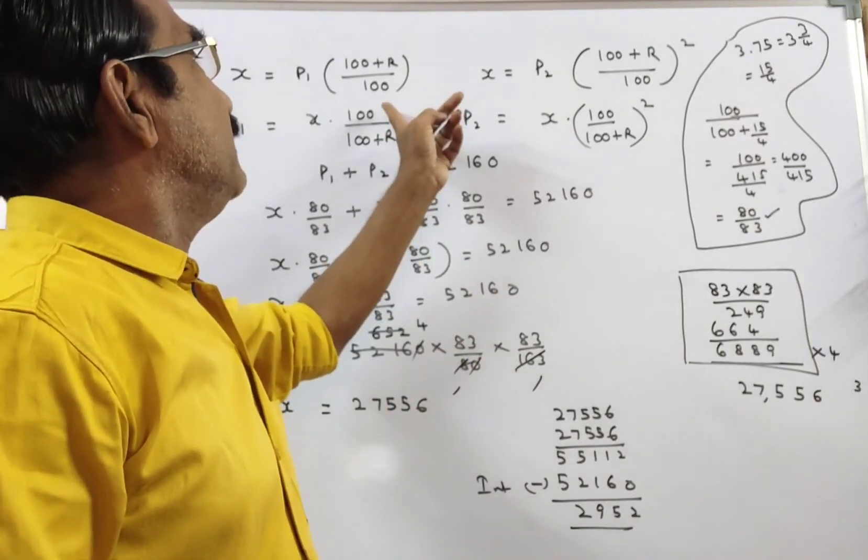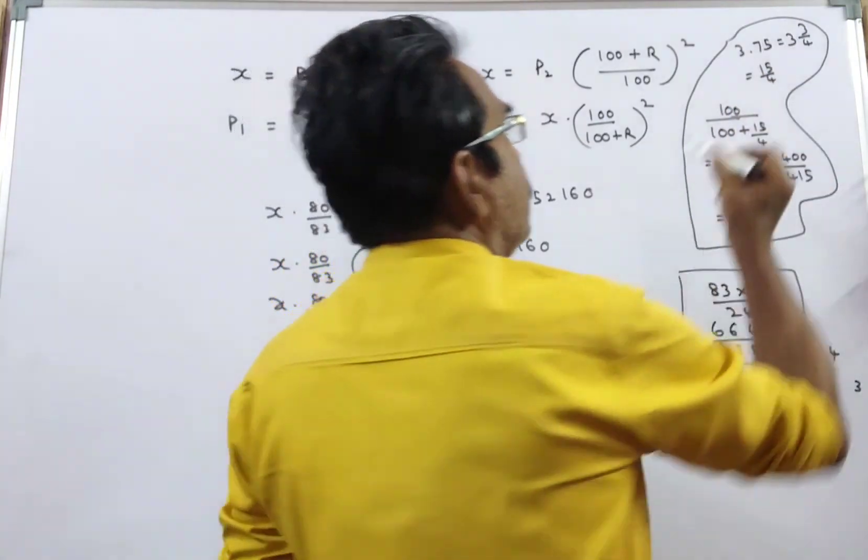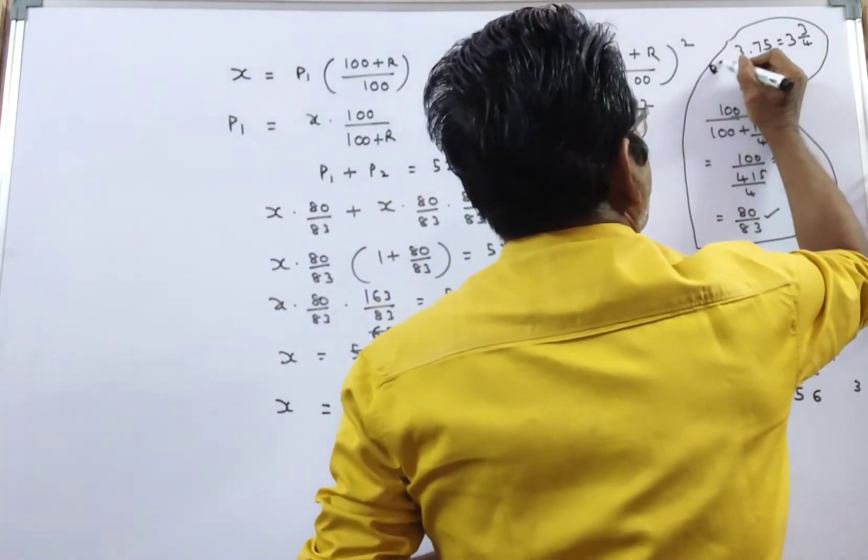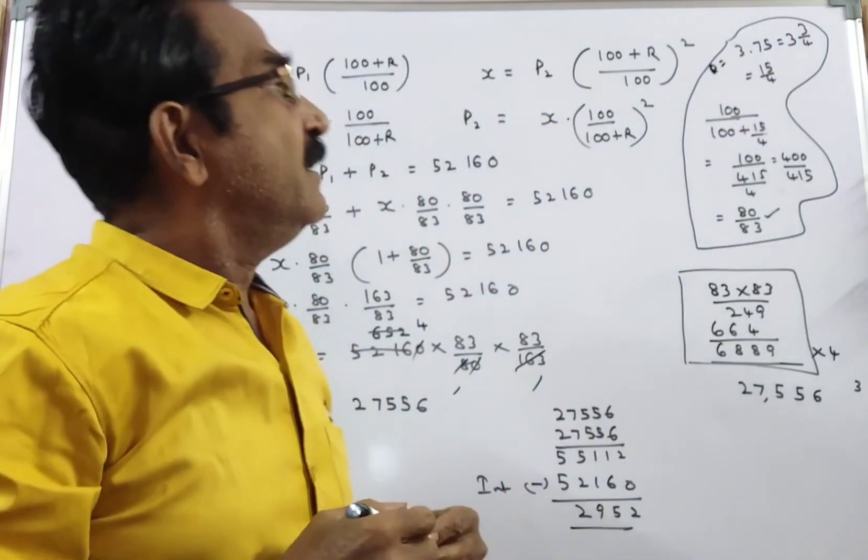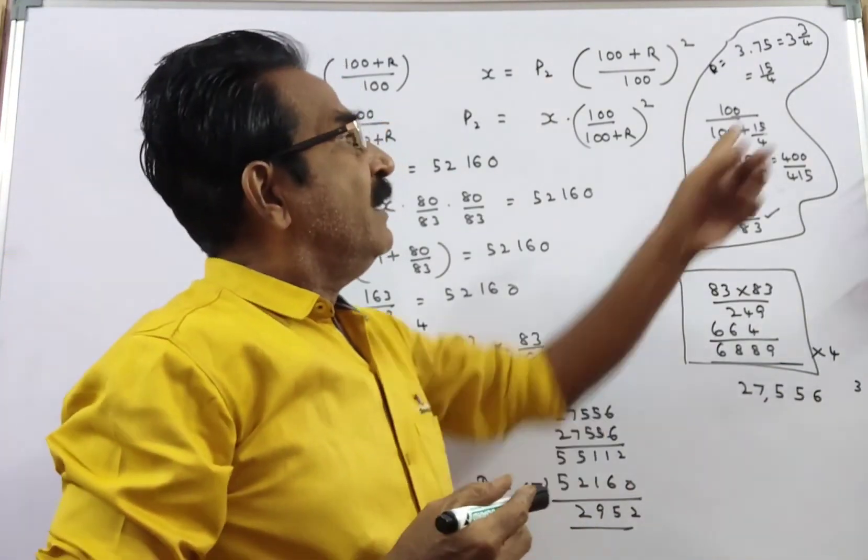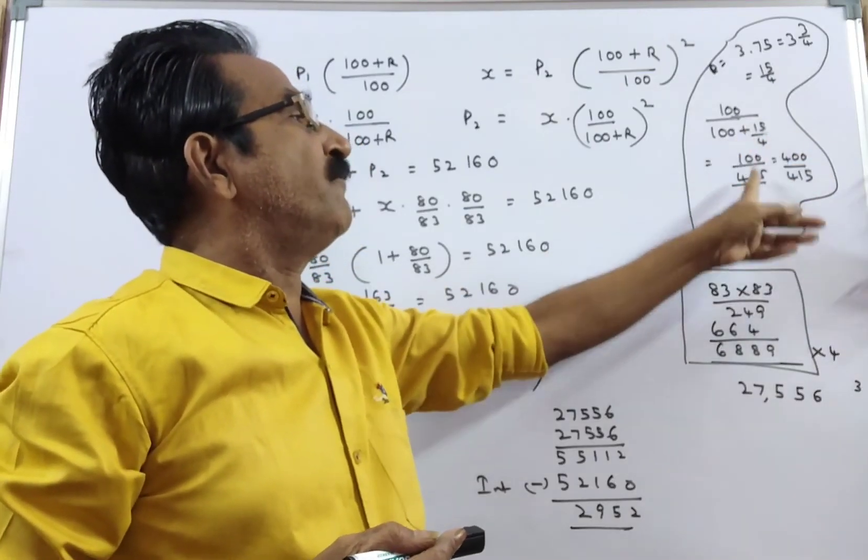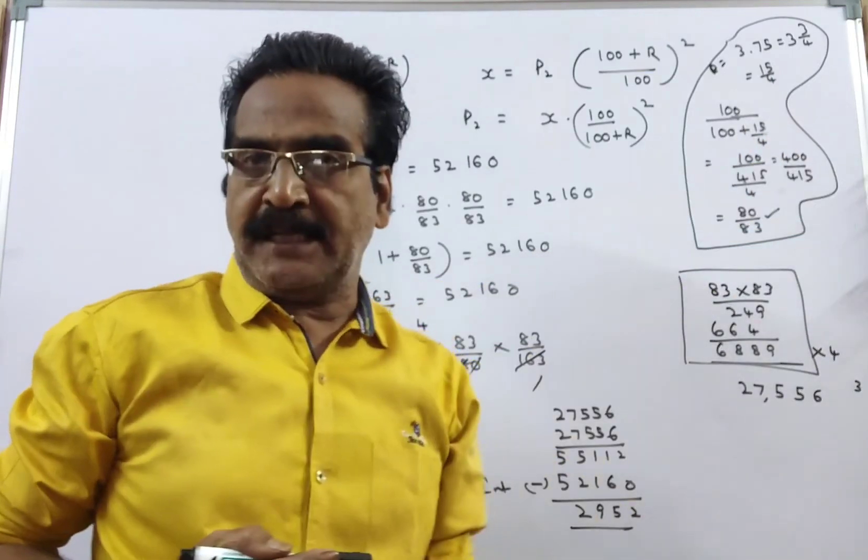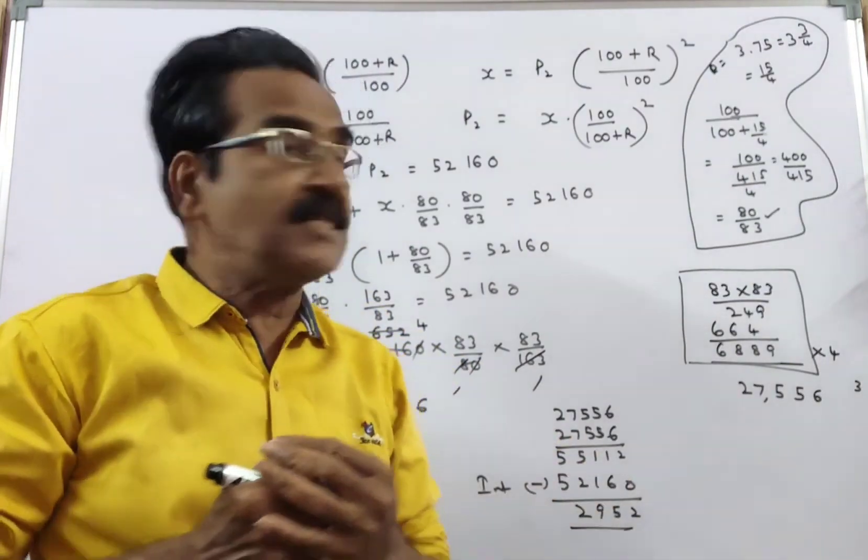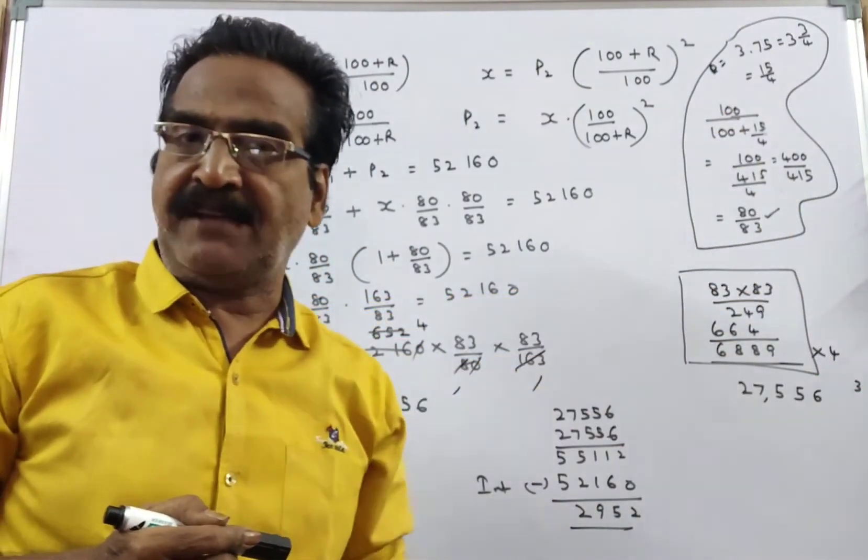Now, let us find the value of 100 by 100 plus r, where r is equal to 3.75%, that is 3 and 3 by 4, which equals 15 by 4. So 100 by 100 plus r is equal to 100 by 415 by 4, that is equal to 400 by 450. This simplifies to 80 by 83.